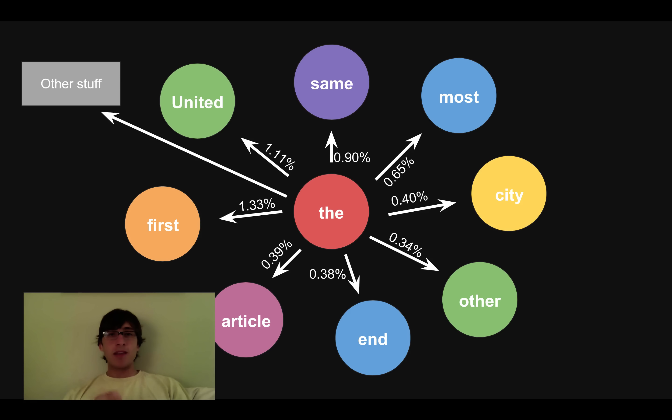Even if we're picking the next word randomly, we're going to be picking it randomly in such a way that first has a 1.33% chance of happening, same has a 0.90% chance of happening, etc. So we're picking randomly, but we're doing it in a biased fashion, and we're biasing it the same way our Markov chain says we should bias it. If it says first happens more than city after the word the, then we're going to pick randomly in that biased way. We're going to do it the way the Markov chain says to do it.